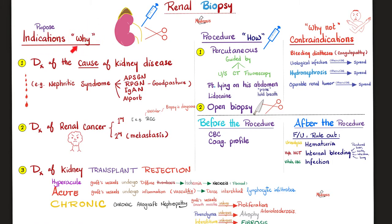So why should we biopsy the kidney? To diagnose the actual cause of kidney disease. Sometimes it's very hard to make a diagnosis based on the clinical signs and symptoms and by examining the urine. Sometimes we need an invasive procedure like kidney biopsy, especially in nephritic syndrome, or to diagnose kidney cancer — whether the cancer started in the kidney or started in another organ and metastasized to the kidney. Be very careful if this is primary renal cell carcinoma because it's very vascular, which means the biopsy is dangerous due to a higher risk of bleeding.